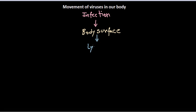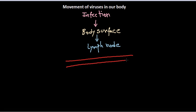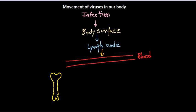The lymph node can be a middle part, or sometimes the virus will be directly associated with the blood vessels. Through this blood, the virus can enter and move. When it reaches the blood, infection can spread further. From the blood it can be transferred into bone marrow.